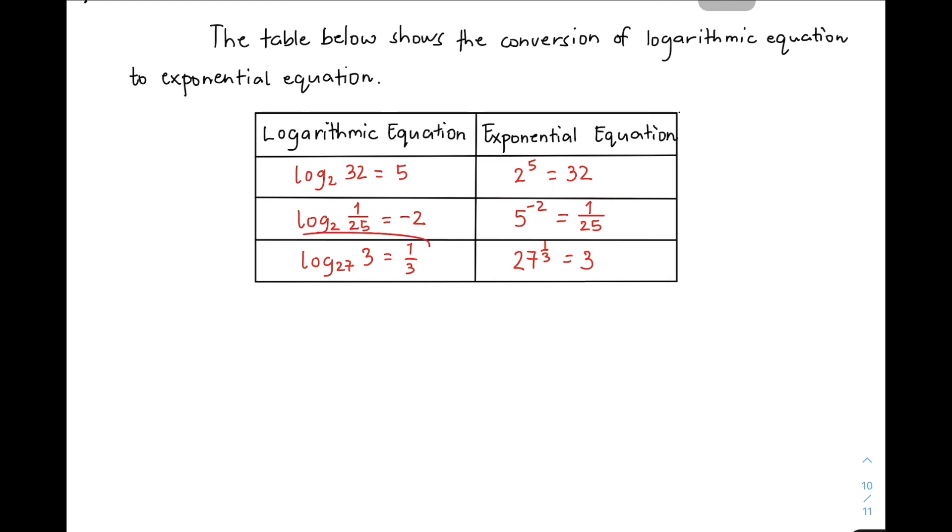And let's have the last one. So we have here the logarithm of 3 base of 27 is equal to 1 third, and its counterpart in exponential equation, we have 27 raised to 1 third is equal to 3.